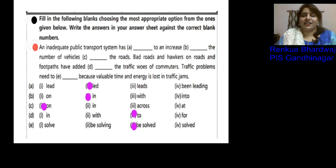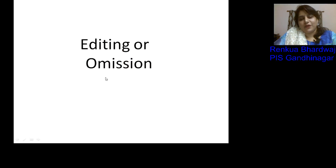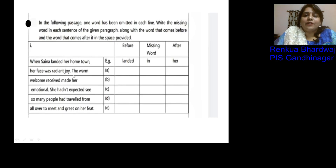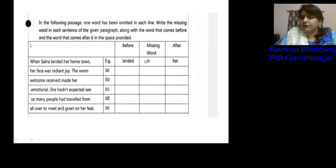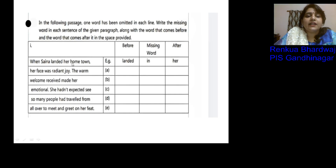Now let us move to editing or omission. Sometimes sentences look correct but when read carefully, a word is missing in each line. In this type of question, one word has been omitted per line and we must find the missing word. The best approach is to make a table in your answer sheet showing the missing word, the word before it, and the word after it. The first example is done for you: 'When Sanya landed her hometown' — missing word is 'in,' before: landed, after: her.